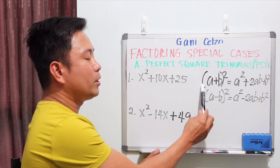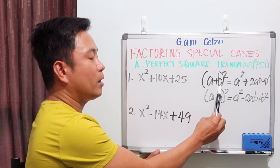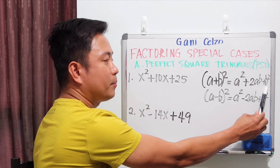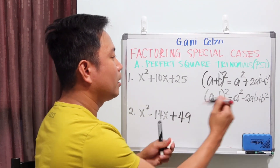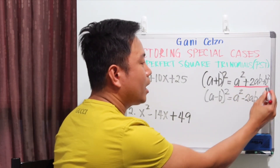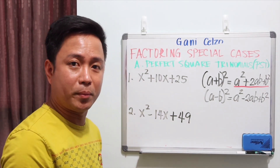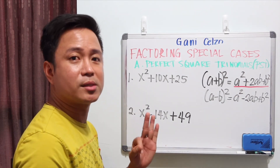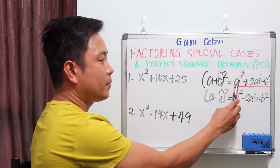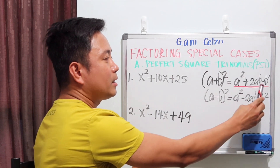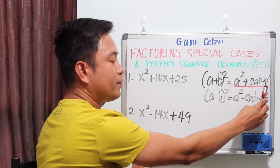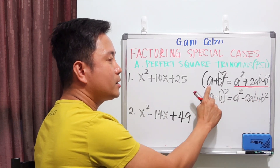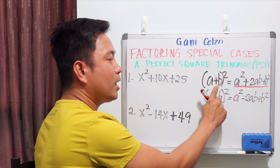So when you square a binomial like (a + b)², you will come up with this trinomial product. This trinomial is called a perfect square trinomial, or PST. It is a perfect square trinomial because of three things: the first term is a perfect square, the third term is also a perfect square, and the second term is twice the product of a and b.